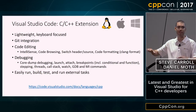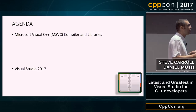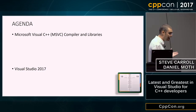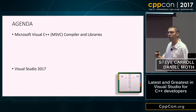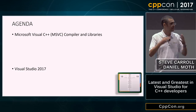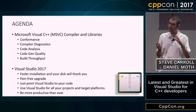We've structured this talk into two parts. The first part focuses on MSVC, the compiler and libraries toolset, which we treat as its own product since you can use it without Visual Studio. The second part is about Visual Studio itself, which you can use with any compiler. The first part is shorter and all slides; the second part will be mostly demos.